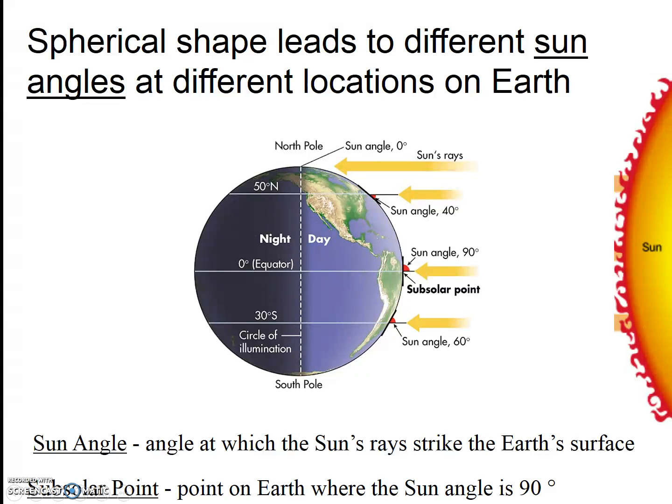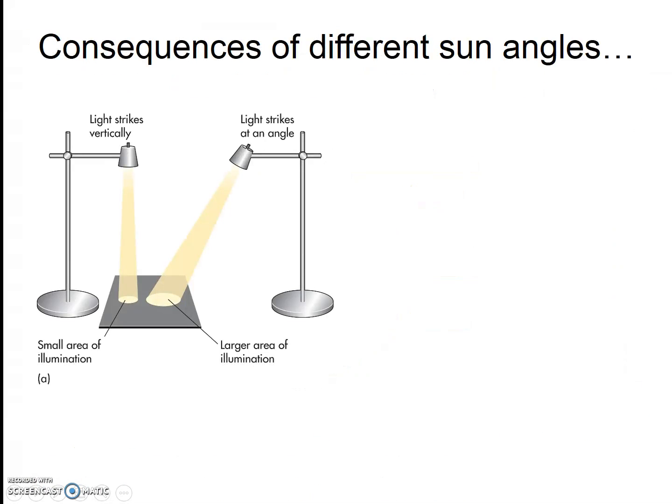So why is sun angle important? First, when the sun comes in at a lower angle, the incoming solar radiation, also called insolation, is spread over a larger area. Thus the energy is more diffuse, which essentially means that the energy per unit area is lower. This is one reason that higher latitudes are cooler. They have less intense sunlight.